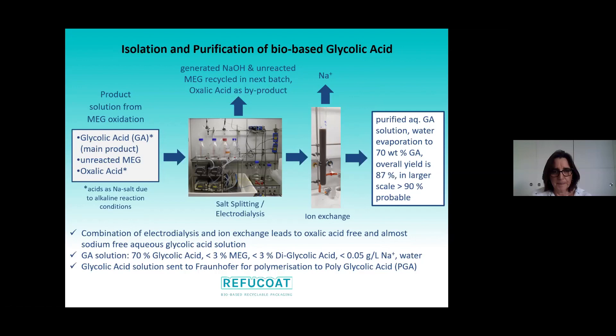We end up with a purified aqueous glycolic acid solution, concentrated to 78%. At lab scale we achieved an overall yield of 87%, and at larger scale an overall yield of more than 90% seems very probable. Our final glycolic acid solution contains 70% glycolic acid, still some unreacted monoethylene glycol, some diglycolic acid produced during electrodialysis, and almost no sodium. This was bottled and shipped to our partner Fraunhofer ICT for polymerization. And that concludes our work on bio-based glycolic acid.